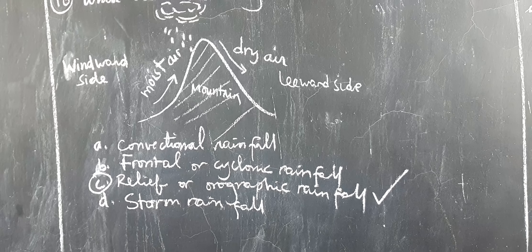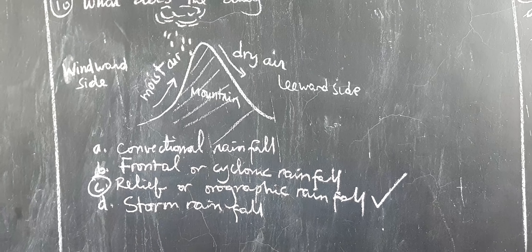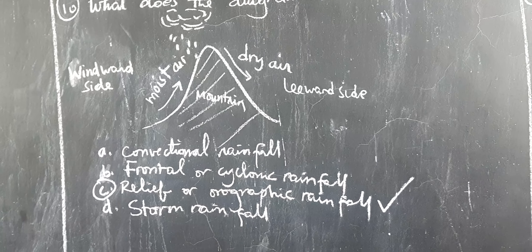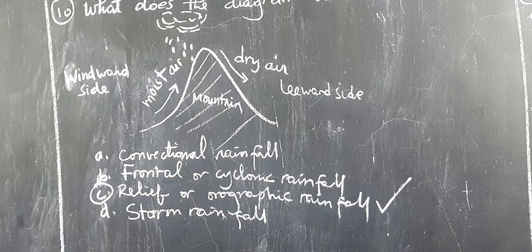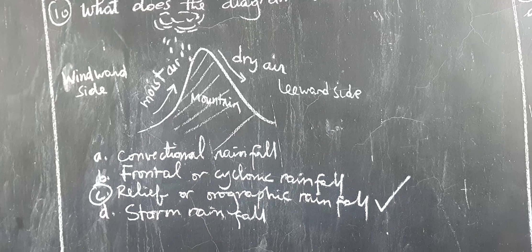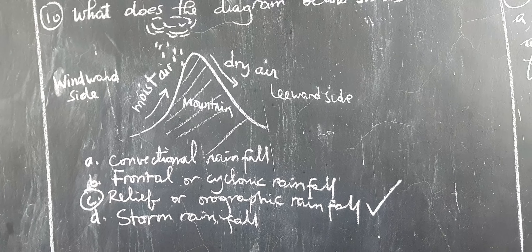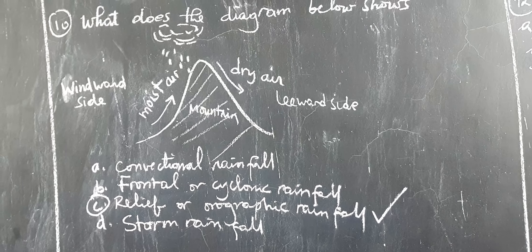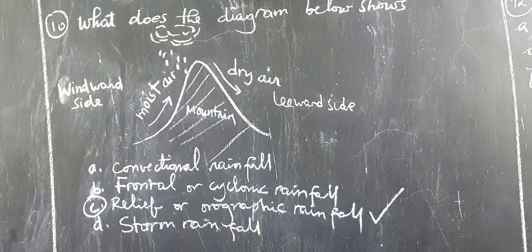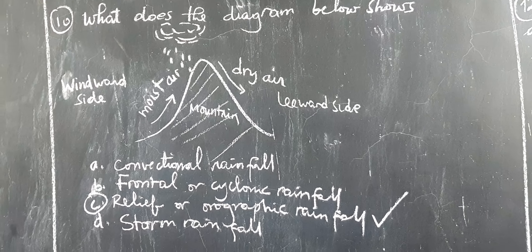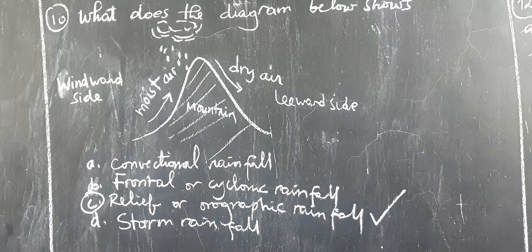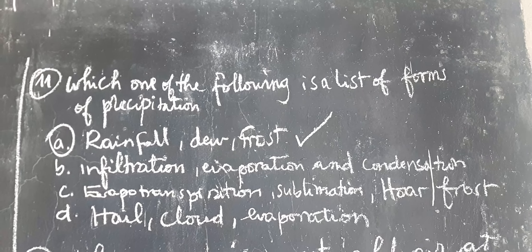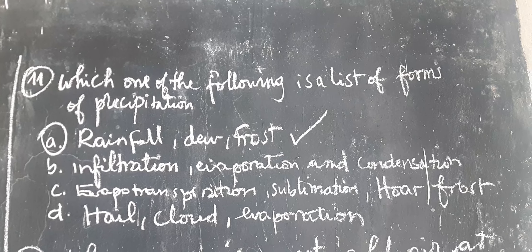The correct answer is C, Relief rainfall, because relief rainfall is one of the types of rainfall that occurs especially in a mountainous region, where moist air ascends a mountain, cools and condenses to form a cloud, which falls as rain. So therefore, the correct answer is C.